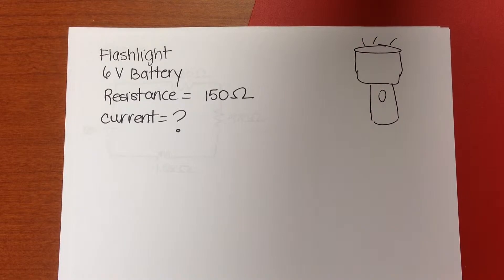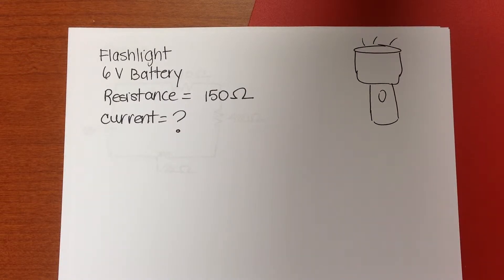Okay, so I'm going to work some problems for you today. Let's start by looking at just a simple Ohm's Law problem. We've got a flashlight with a 6-volt battery and a resistance of 150 ohms. What's the current in the circuit?